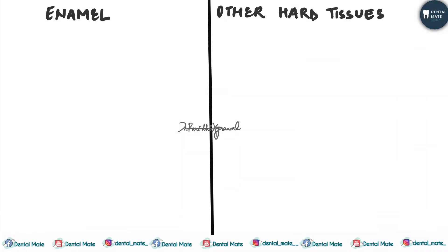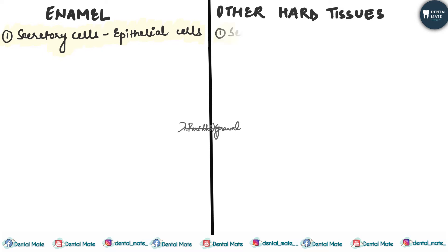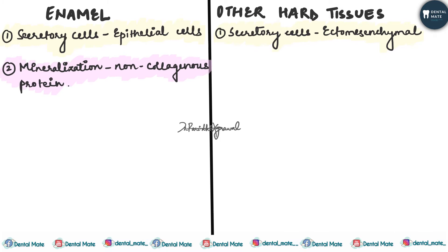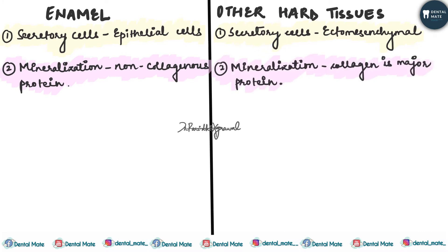So, enamel — the secretory cells for enamel are the epithelial cells, whereas for other hard tissues like dentine, the secretory cells are the ectomesenchymal cells. The mineralization of enamel occurs via non-collagenous proteins, whereas in other hard tissues collagen plays a very important role in the mineralization.